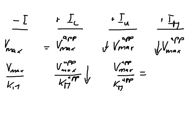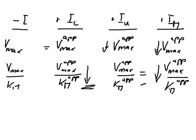Putting this together for the mixed inhibitor: Vmax apparent over Km apparent — we have one component that stays the same and one that goes down, so we would assume it goes down. Now what happens to Km? For a competitive inhibitor, Km goes up — our affinity goes down. In the case of an uncompetitive inhibitor, Km goes down.